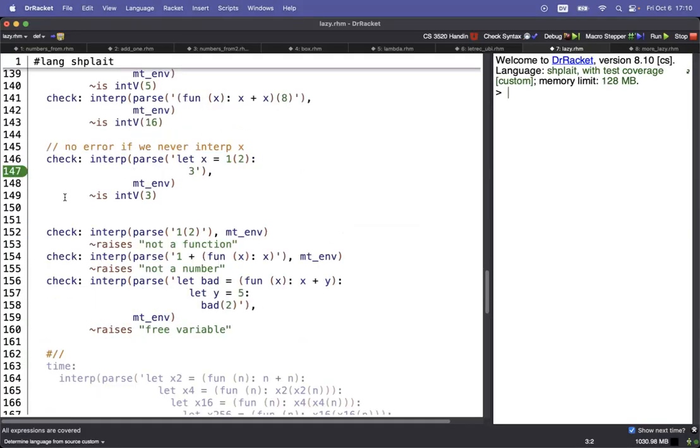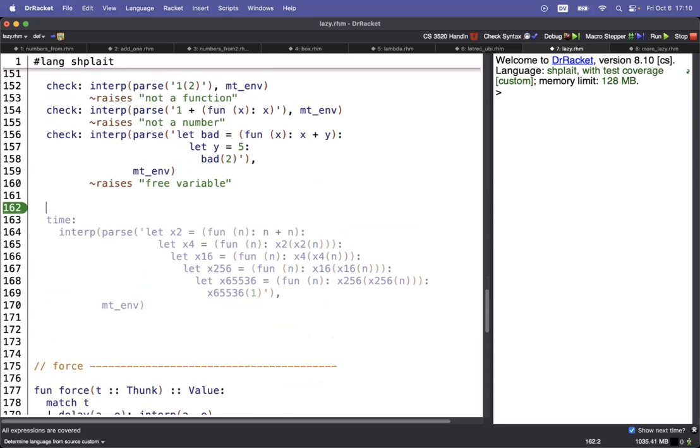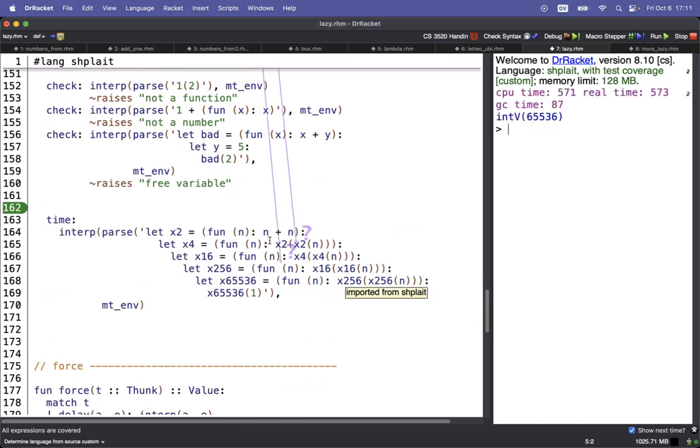So we're back now at our interpreter. We've got a big test down below here. So x two is a function that uses its argument twice. x four is a function that ends up using its argument four times. And then we keep on doubling. 16, 256, 65,000. And running this test takes quite a while. Much more than it needs to be. This is not good.